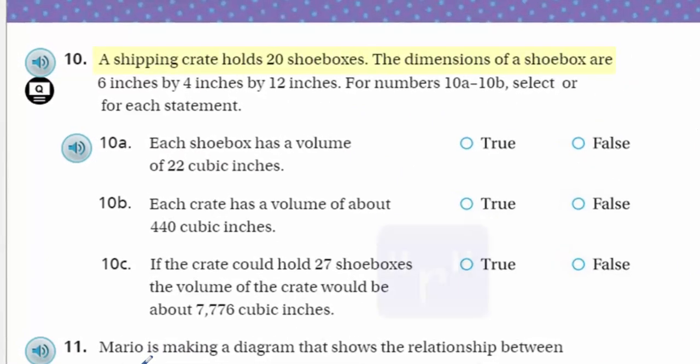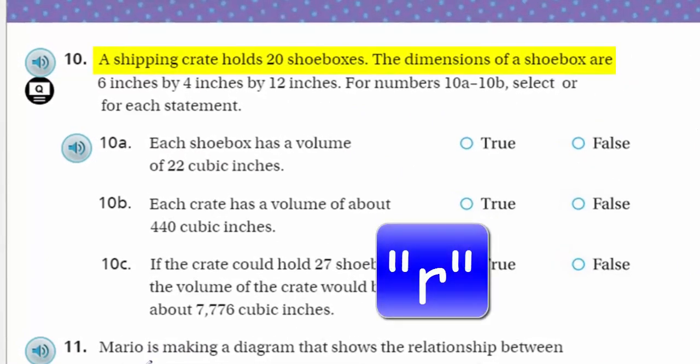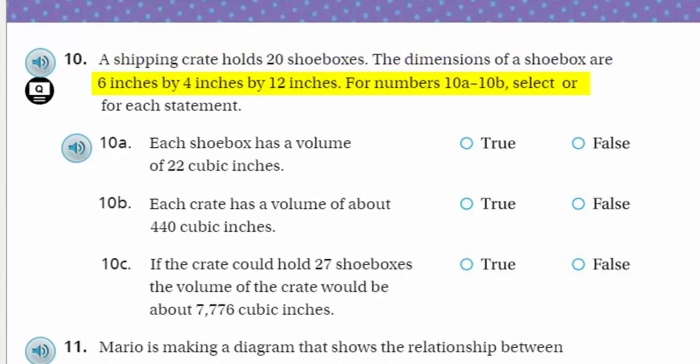Number 10: It says a shipping crate holds 20 shoe boxes. The dimensions of a shoe box are 6 inches by 4 inches by 12 inches. For numbers 10A through 10B, select - I think that's a little typo - I think it probably means true or false. Select true or false for each statement.